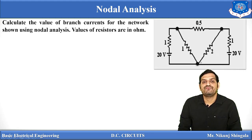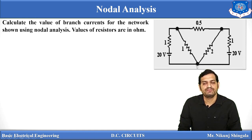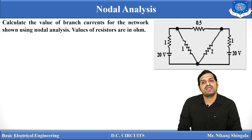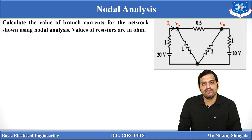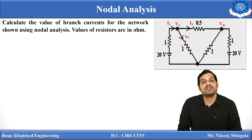Node three is the reference node with zero potential, as all branches meet here. The two nodes of interest are assigned names VA and VB. Next, assign branch currents: current flowing into node A is I1, and currents coming out are I2 and I3. There is no limitation on unknowns, so we take I1, I2, and I3 separately — no need to write I1 minus I2.